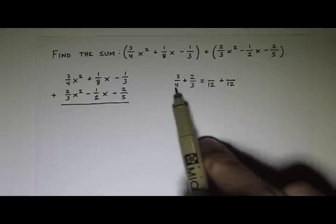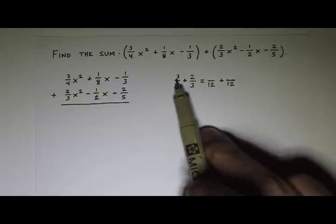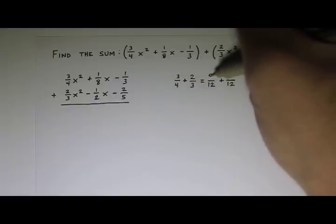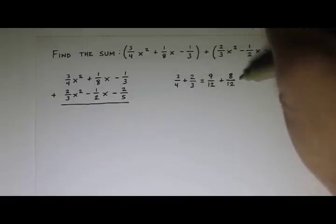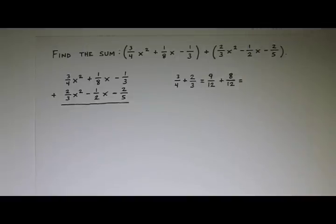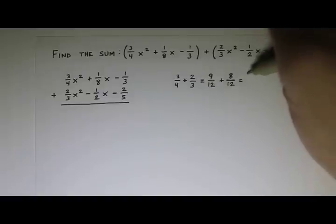4 times 3 is 12, so 3 times 3 is 9. 3 times 4 is 12, so 4 times 2 is 8. 9 plus 8, that's 17/12.